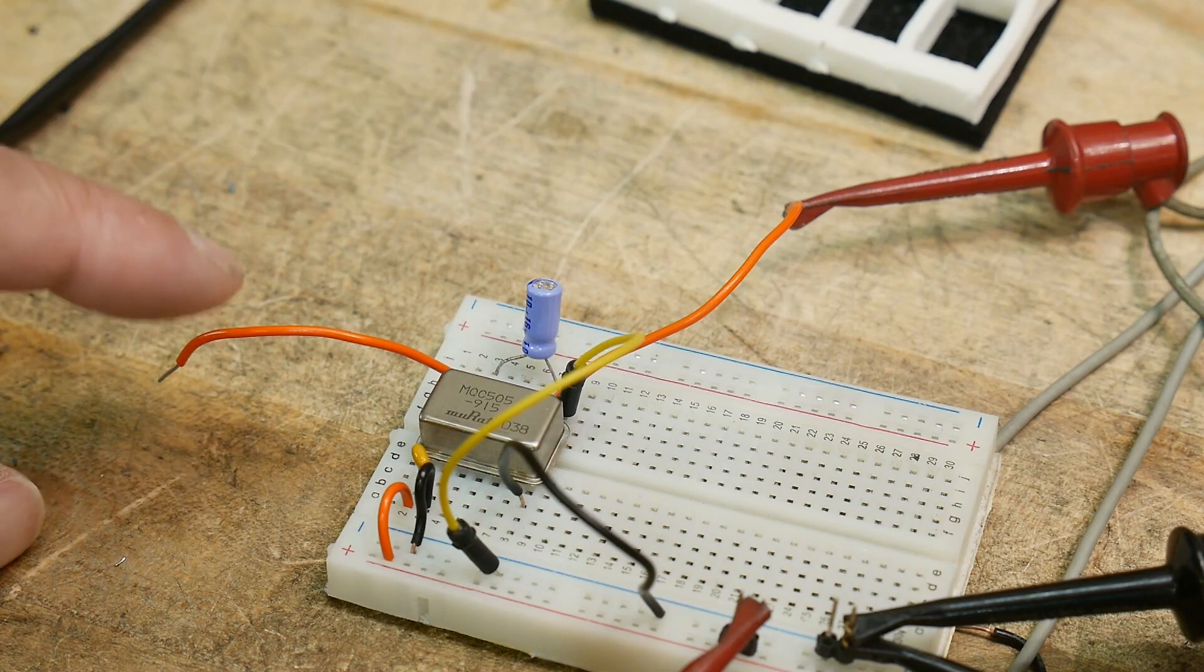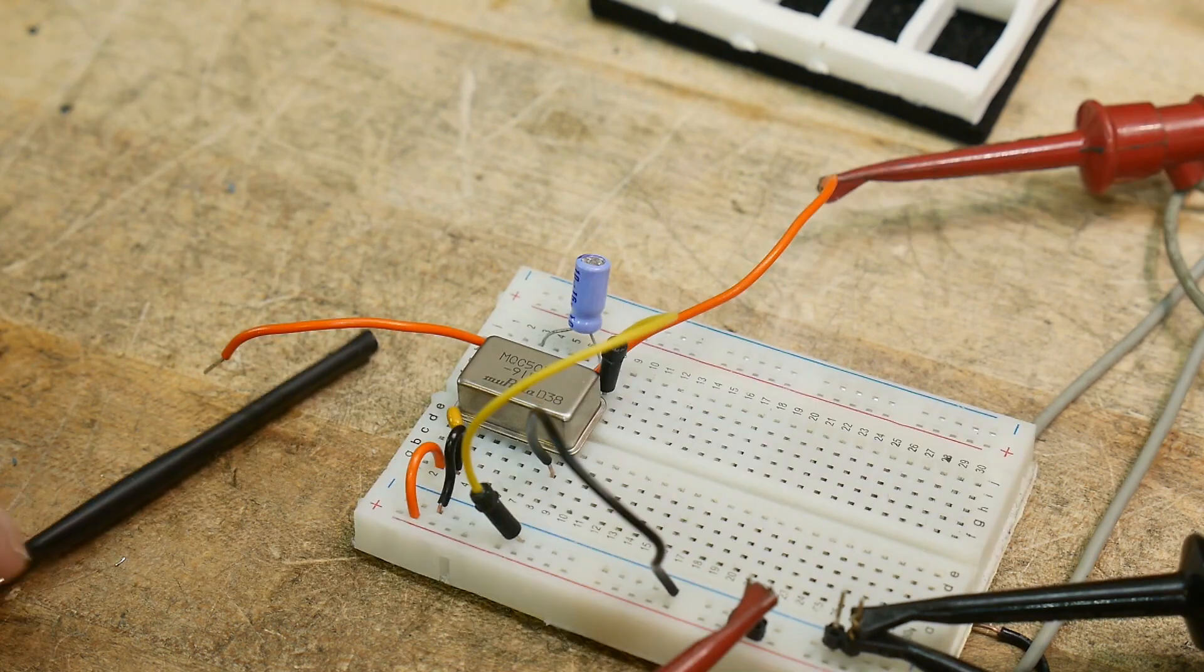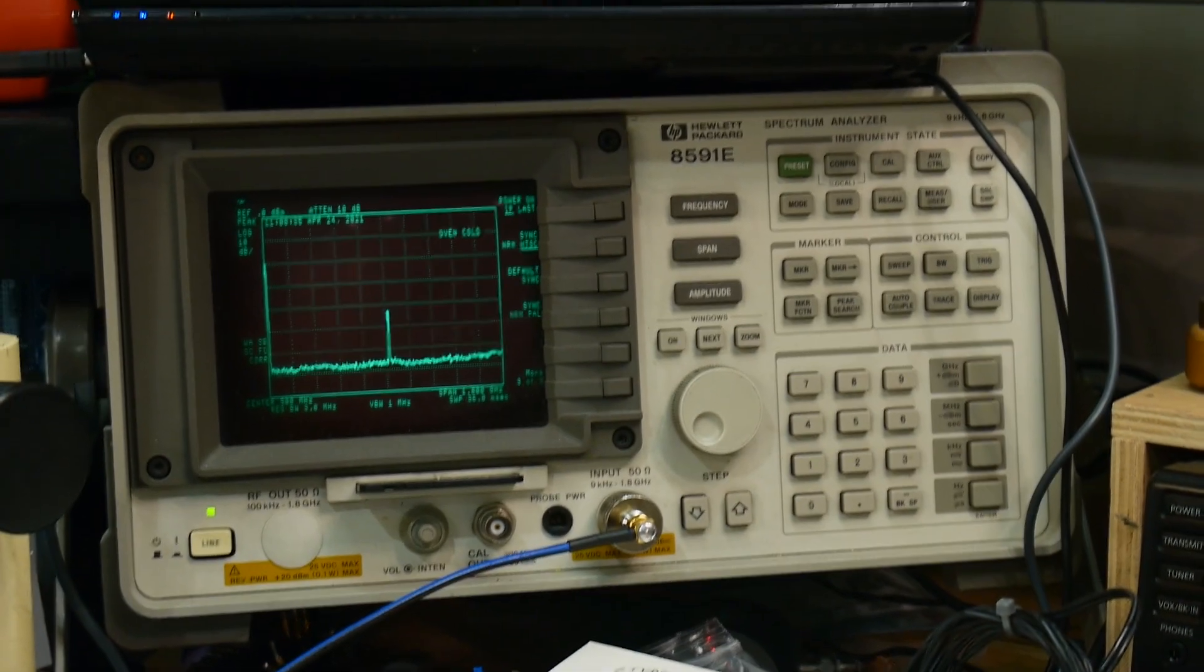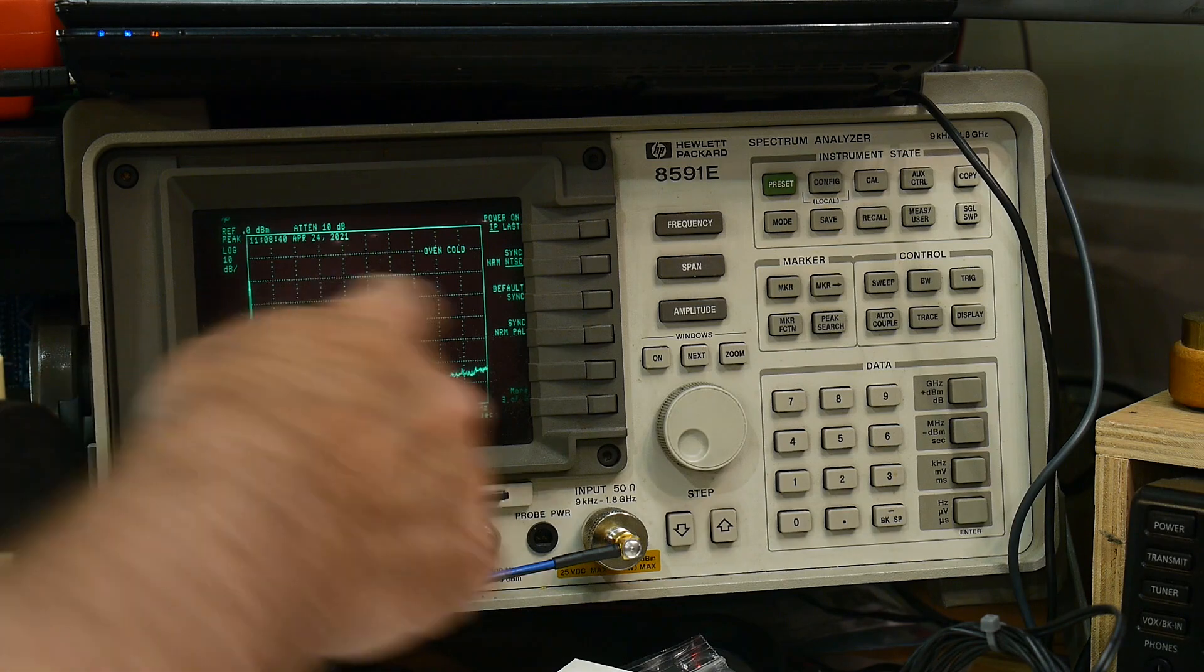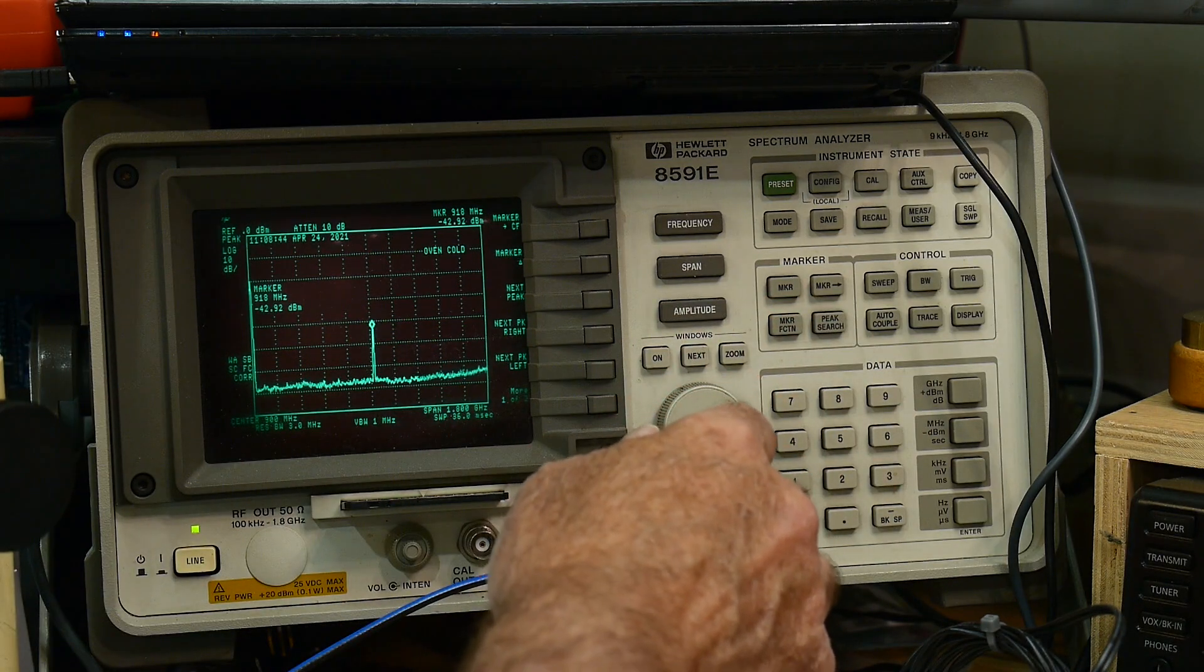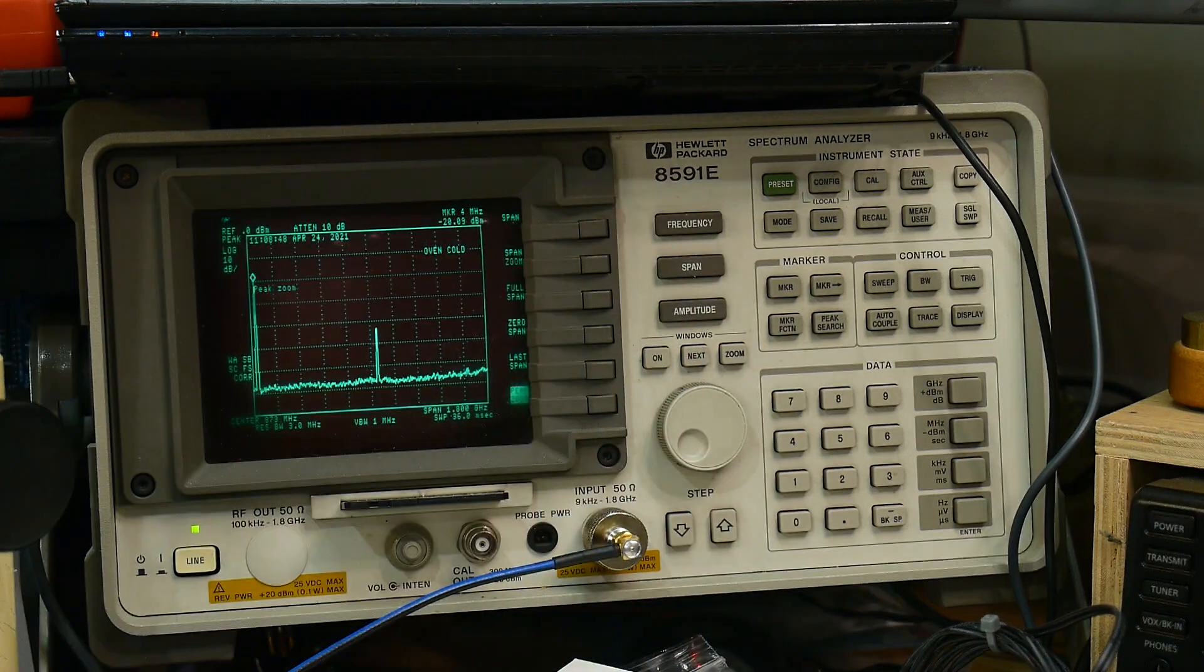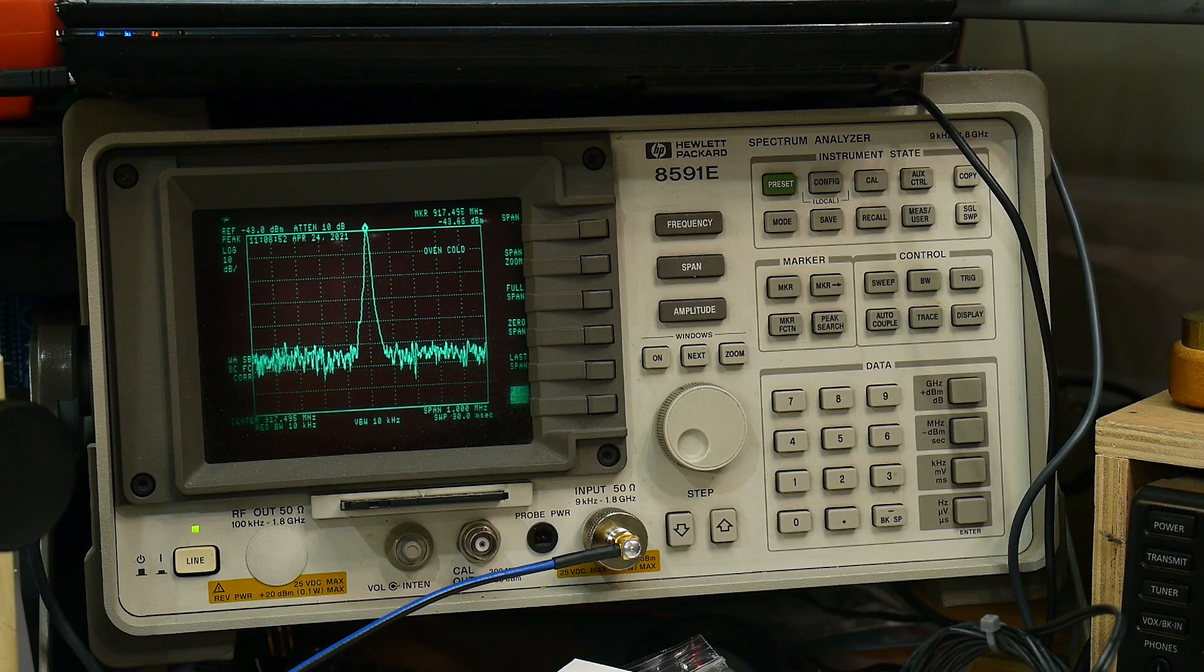But this is the output right here, and I'm going to use my non-contact scope probe, my E-field probe, and then we can take a look at it on the spectrum analyzer. And we see we have some type of signal here in the middle, and let's do a peak search on that, and then we will zoom in on it. This machine will automatically zoom in on that peak.